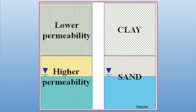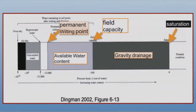Permeability is how easy or hard it is for water to move through a soil. When water enters a soil, it can either move toward the soil surface and leave the soil, remain in the soil, or move downward to become part of the groundwater. When water remains in the soil, it drains to the point of field capacity. This is the amount of water that can be held against the force of gravity. When a soil reaches field capacity, the water no longer moves downward.